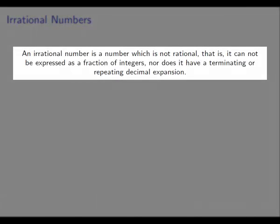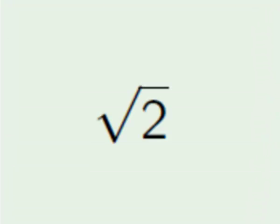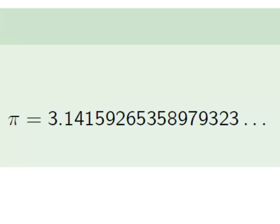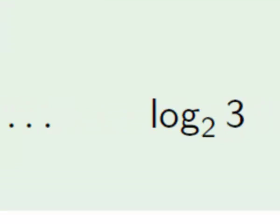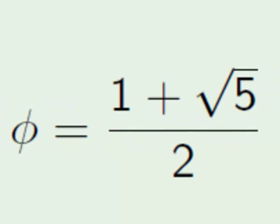Conversely, an irrational number is a number which is not rational, so we can't write an irrational number as a fraction of integers. Also, an irrational number won't have a terminating or repeating decimal expansion. Here are some examples of irrational numbers. The square root of 2 is an irrational number — there's no way to write it as a fraction, and you're not going to be able to find a pattern in its decimal expansion. Pi, of course, is a very famous number and is also irrational. Log base 2 of 3 is irrational, and also phi, otherwise known as the golden ratio, which is equal to 1 plus the square root of 5 over 2.